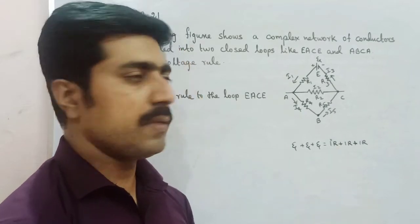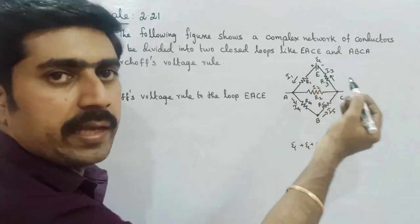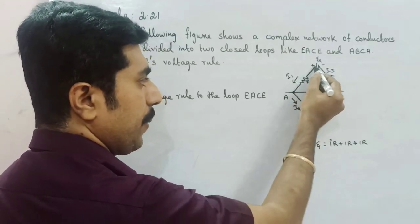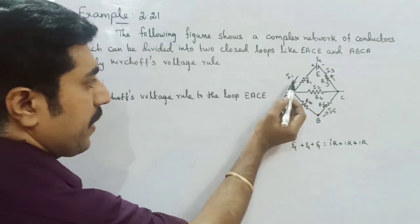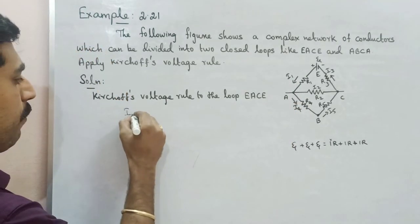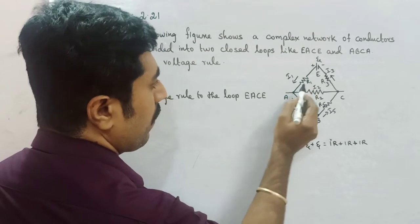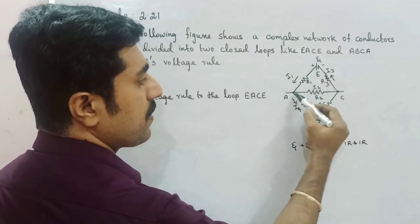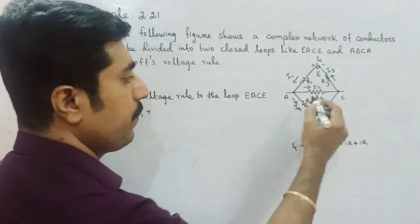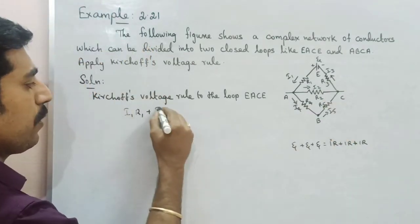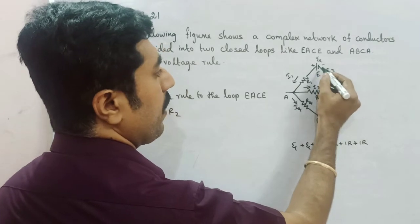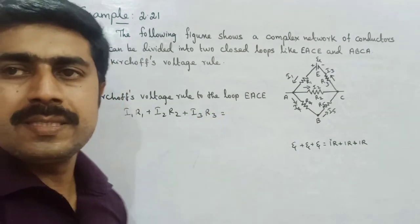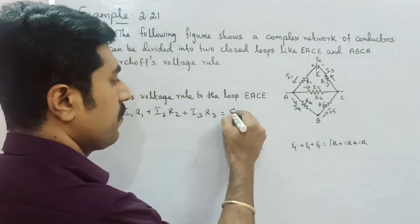Current and resistance. The current flows from the positive terminal of the battery to the negative terminal, so positive sign. For loop EACE: current and resistance gives I1R1 plus I2 into R2, and if we reach E, I3 into R3. This equals the EMF of the cell.